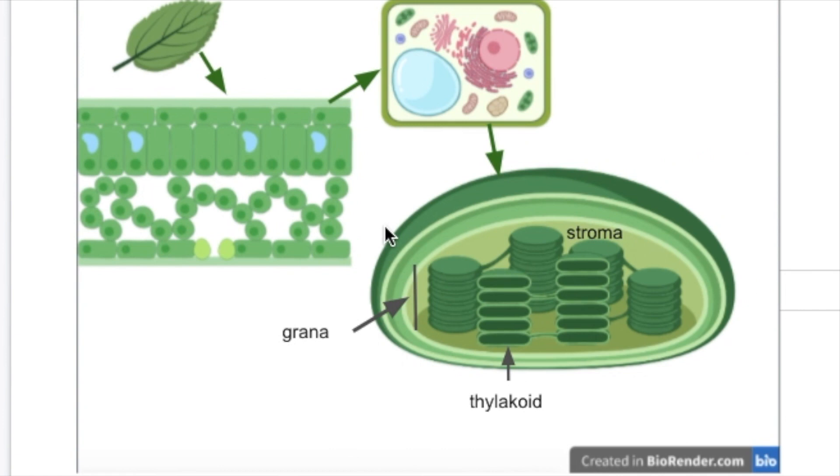Let's start by getting some perspective. Here we have a leaf and this is a transverse section of the leaf, cutting the section this way and looking in this direction. Then if we zoom in on one individual cell of that leaf, this cell here from the palisade mesophyll might be a good one to look at because in the palisade mesophyll you have lots of these little green structures.